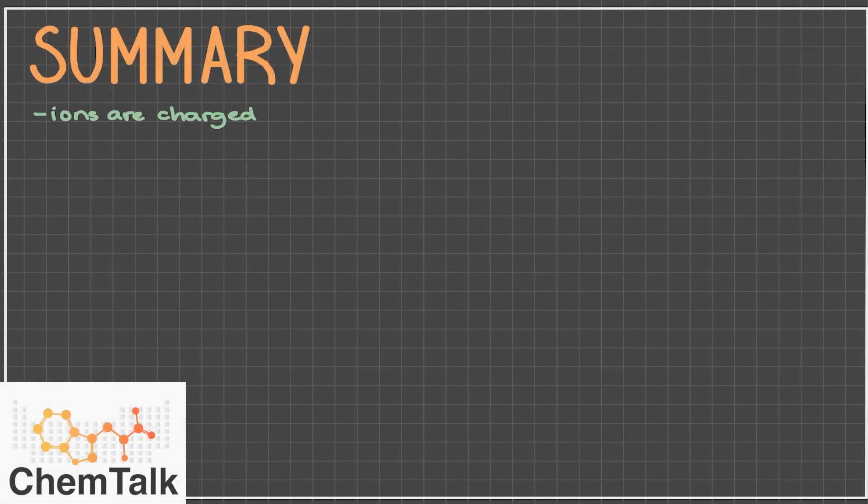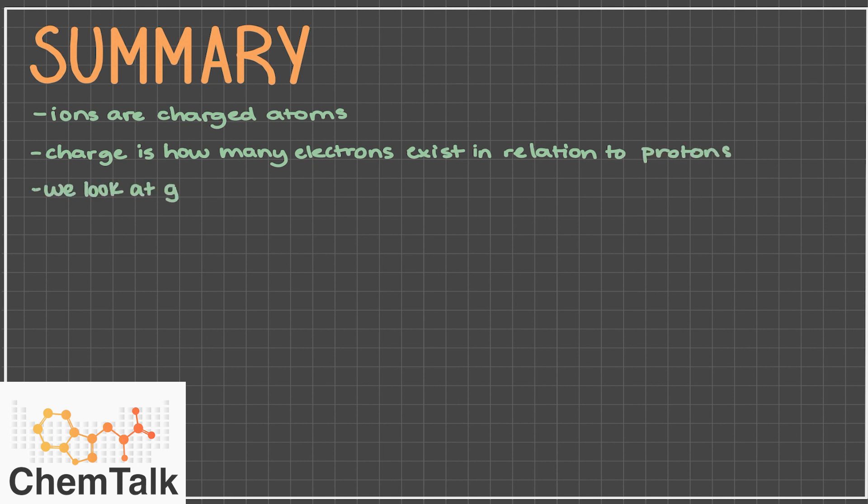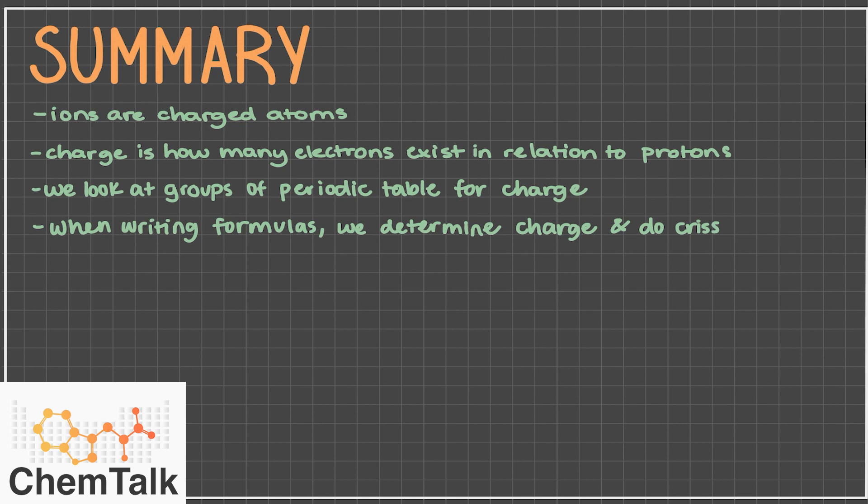Before we end this video, let's recap what we covered in our lesson today. Ions are charged atoms, and charges are how many electrons in relation to protons exist in an element. By looking at the groups of a periodic table, we can determine the charge of an ion. When writing chemical formulas for ions that bond together, we determine the charge of both ions and use the criss-cross method to determine how many of each we need. Ions are seen within photography, as the silver ions within photographic film are reduced to produce images.